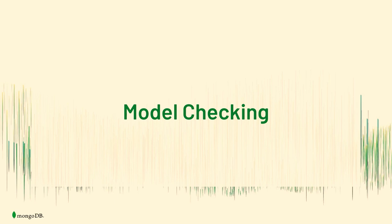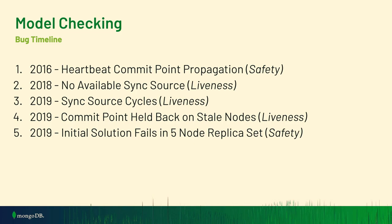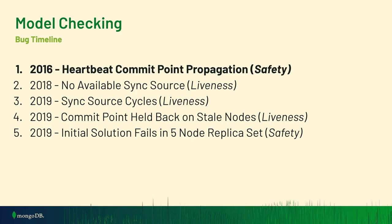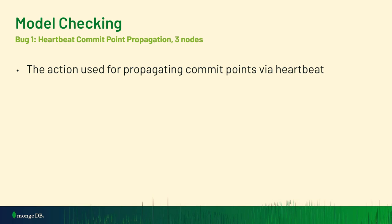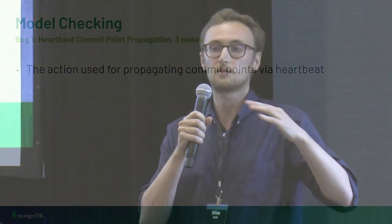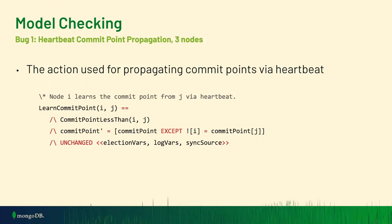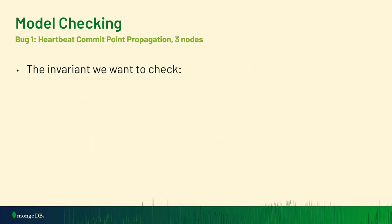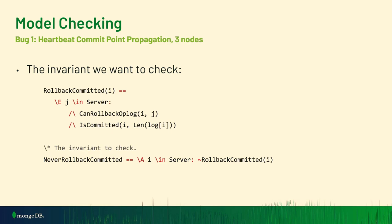Now I'll talk about our experiences with model checking these bugs. For propagating commit points via heartbeat — meaning information can flow from any node to any other node with no restrictions — the action is very simple: it takes the state of one node and gives it to another, with the only restriction being to only propagate if it's newer than what the recipient already has. We specify the invariant NeverRollbackCommitted, which says: if you have a committed log entry, make sure it's never possible that you'll roll that log entry back.